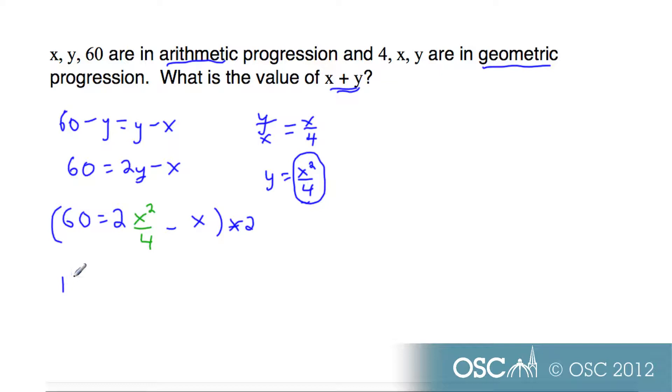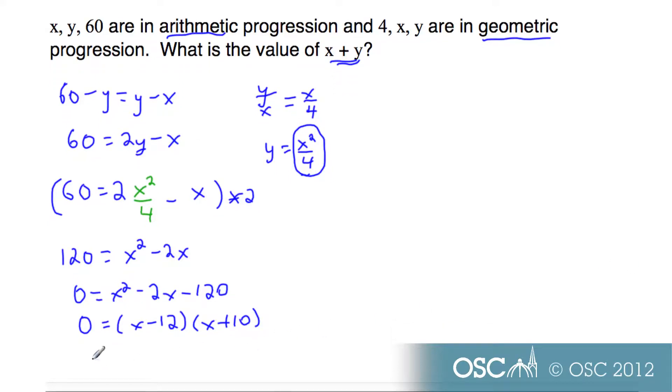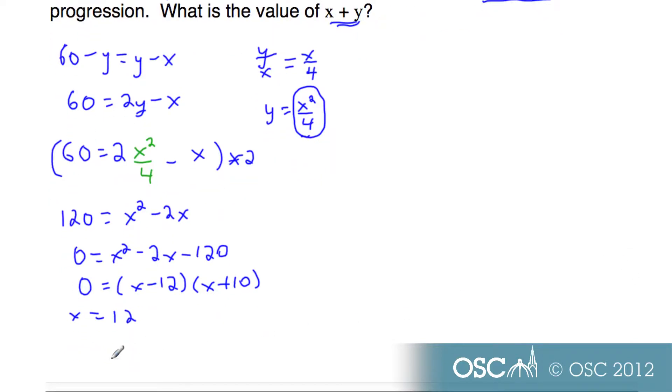And we get 120 equals x squared minus 2x. Which you can see as a quadratic, 0 equals x squared minus 2x minus 120. It factors very nicely. x minus 12 and x plus 10, giving x equal to 12 or x equal to negative 10. Two possible solutions.